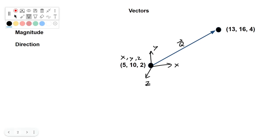Well, our vector q itself is going to be 13 minus 5i plus 16 minus 10j plus 4 minus 2k. So we've just subtracted each of the coordinates. So our vector is going to be 8i plus 6j plus 2k.